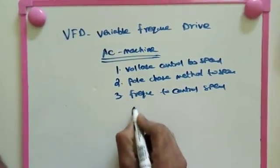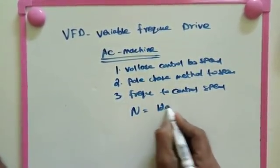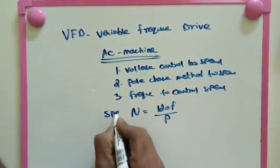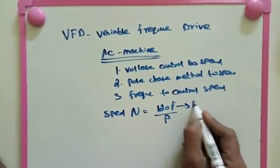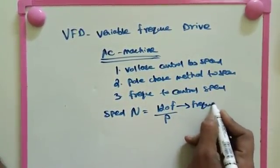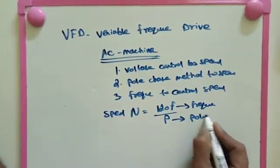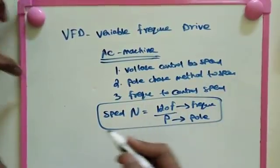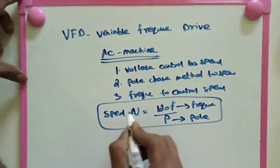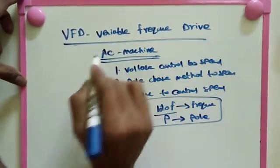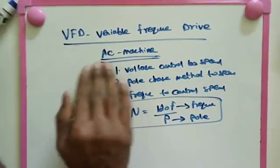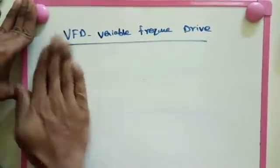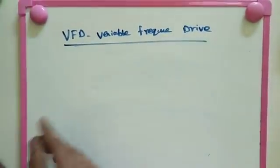The speed formula is N equals 120F divided by P, where N is speed, F is frequency, and P is poles. We are going to use the frequency method for AC machine speed control. This method is what we call variable frequency drive.